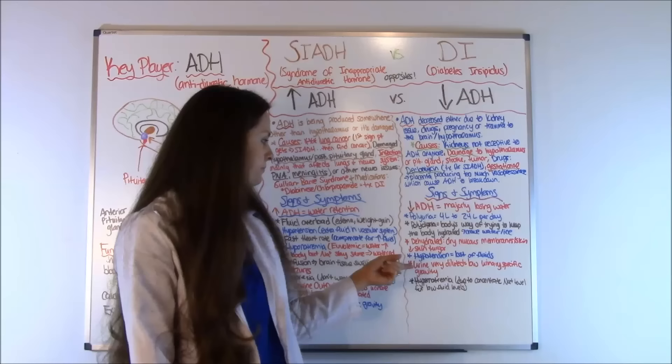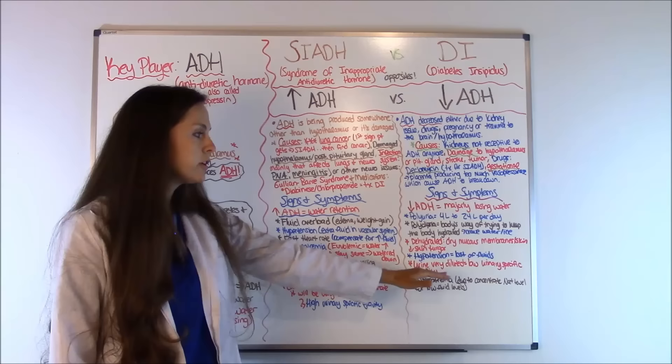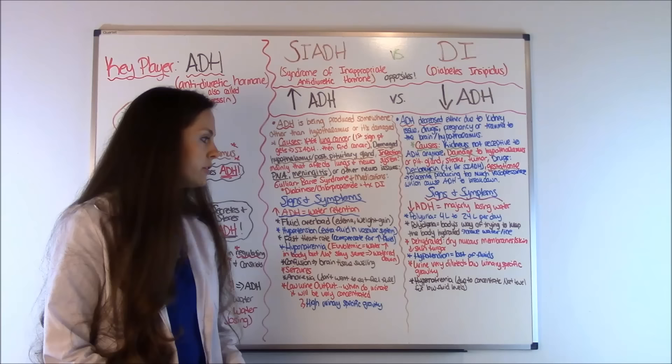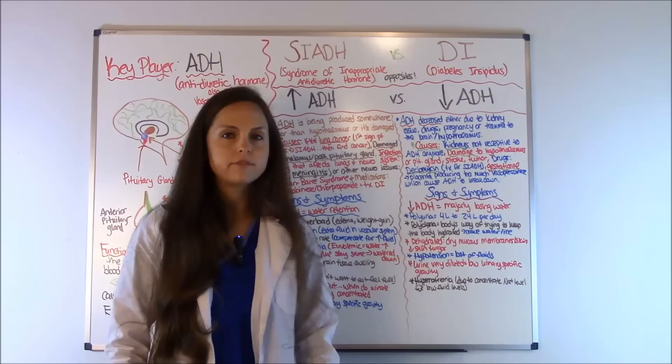Because DI patients are urinating constantly, their urine is going to be very diluted — not concentrated. So they'll have a low urinary specific gravity. They'll also have hypernatremia — a high sodium level — due to losing all that fluid. All that fluid is gone and all that's left is the sodium, so there's a lot of sodium in the body and not a lot of water.